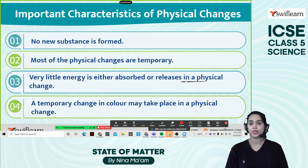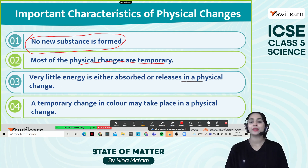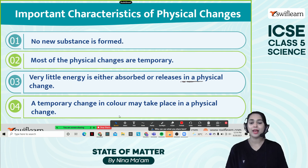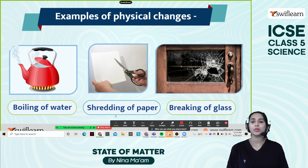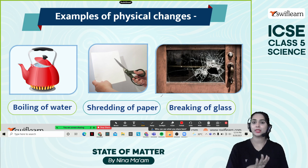Important characteristics of physical change: no new substance is formed; most physical changes are temporary — because once water forms, we can turn it back into ice cubes; very little energy is either absorbed or released in a physical change; and a temporary change in color may take place. Everything is temporary. Examples of physical change include boiling water, shredding of paper, and breaking of glass — no new items are produced, it's just a change in size, shape, and quantity.